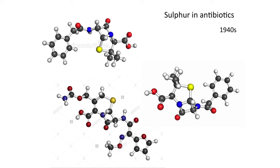So sulfur and antibiotics — those are the yellow atoms in those structures. In about the 1940s these came into play and were used in World War II.